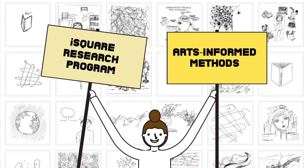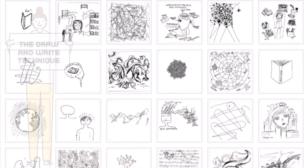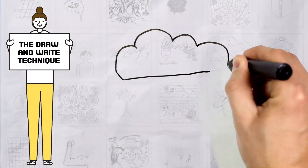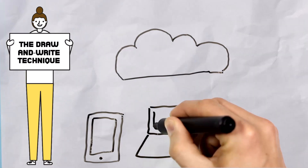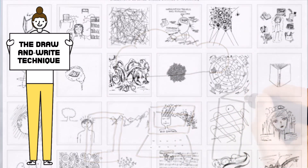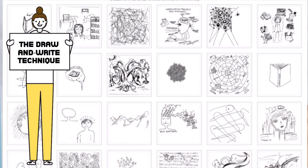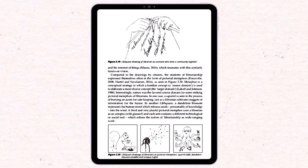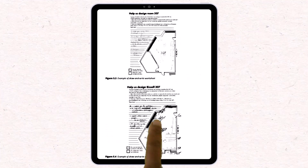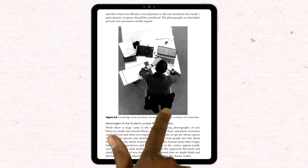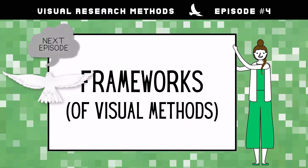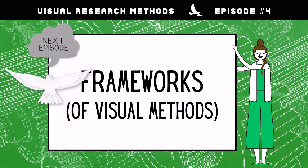My own iSquare research program introduced arts-informed methods and the draw-and-write technique to information science. To study information in a new way, my team collected more than 5,000 original drawings of information from research participants in 12 countries. A recent book provides additional background and showcases six different applications of visual research methods in information science. Yet visual research methods are still uncommon in information science, and this video series aims to expand and enhance their applications.